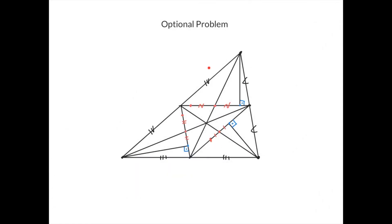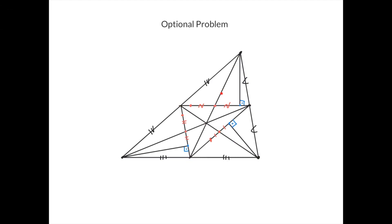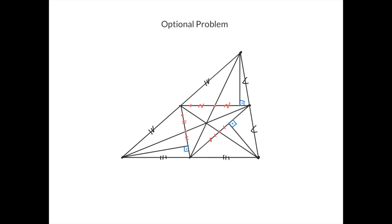This is the optional problem. We have a triangle, and the three midpoints of the three sides are taken. Then this line, this line, and this line get intersected with this line, this line, and this line at these points. This is an altitude in this triangle, this is an altitude in this triangle, and this is an altitude in this triangle. This point is the symmetric point of this one with respect to this one, so this segment equals this segment. Similarly, this point is symmetric to this point with respect to this point, so this equals this. We need to prove that the six red points on the picture lie on the same circle.